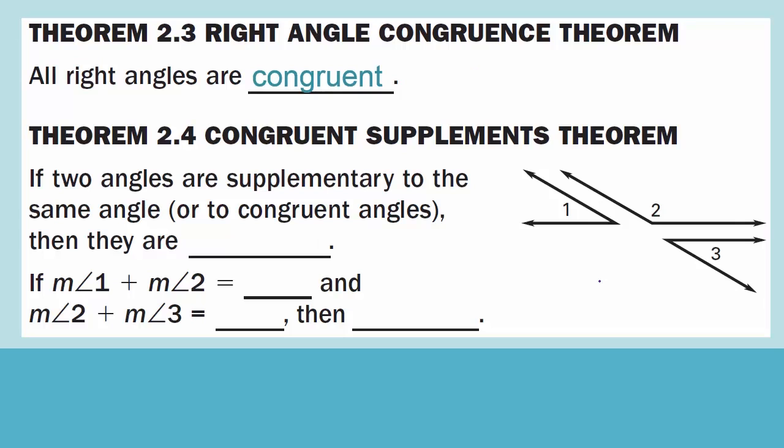Theorem 2.4: Congruent Supplements Theorem. If two angles are supplementary to the same angle or to congruent angles, then they are congruent. Remember, supplementary means the two angles add up to 180 degrees. If the measure of angle 1 plus angle 2 equals 180 degrees, and the measure of angle 2 plus angle 3 equals 180 degrees, we can get rid of angle 2 using the transitive property and say angle 1 is congruent to angle 3.